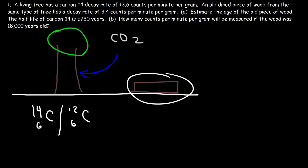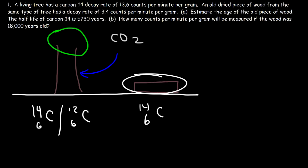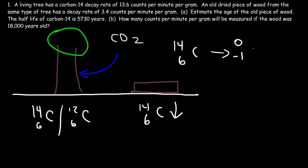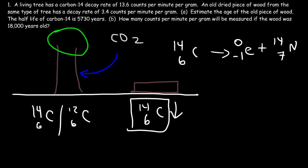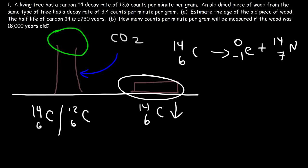For the dry piece of wood that's no longer attached to a living tree, it's not absorbing carbon dioxide from the atmosphere anymore. So the carbon-14 in this piece of wood decreases over time. Carbon-14 naturally decays through beta decay — it emits a beta particle, which is basically an electron, and as a result it converts into nitrogen-14. So if a piece of wood is not absorbing carbon dioxide from the air, the carbon-14 count decreases and the decay rate will decrease over time. That's how you can tell how old this piece of wood is after it stopped absorbing CO2 from the atmosphere.